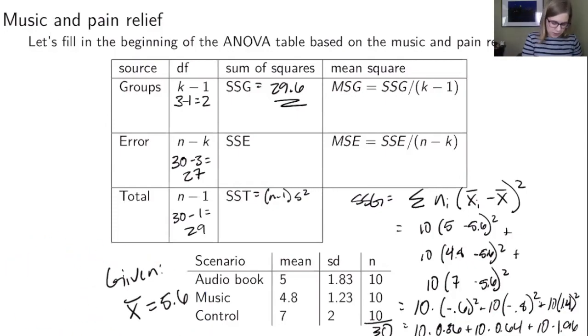So the shortcut formula for the SSE is it's the sum of ni minus 1 times si squared. And in this case that's going to be n1 minus 1 times s1 squared plus n2 minus 1 times s2 squared plus n3 minus 1 times s3 squared.